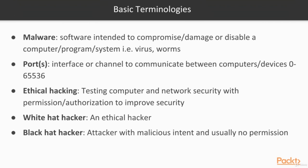Malware is software intended to compromise, damage, or disable a computer, program, or system. Examples include a virus and worms. Ports are interfaces or channels used to communicate between computers or devices, ranging from 0 to 65,536, with 0 to 1024 being the most popular port numbers for services. For example, port 22 is commonly used for SSH, and FTP is commonly run on port 21.